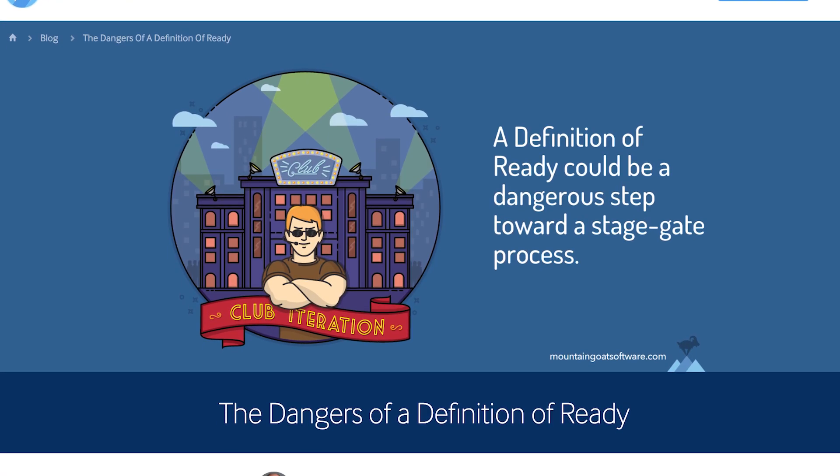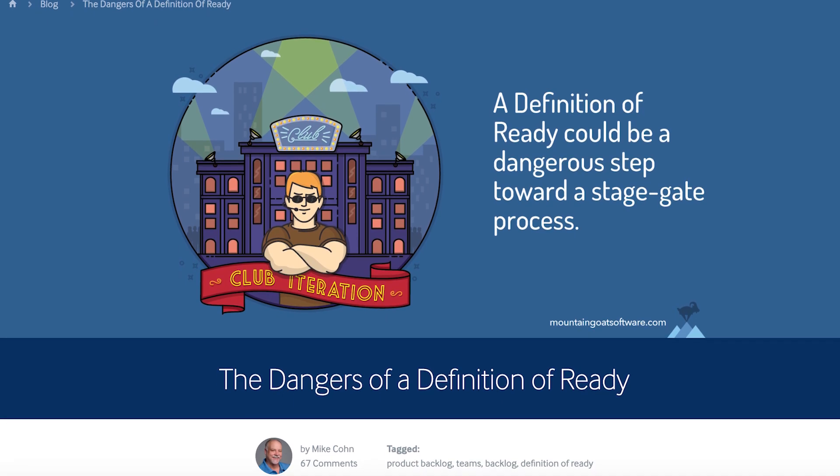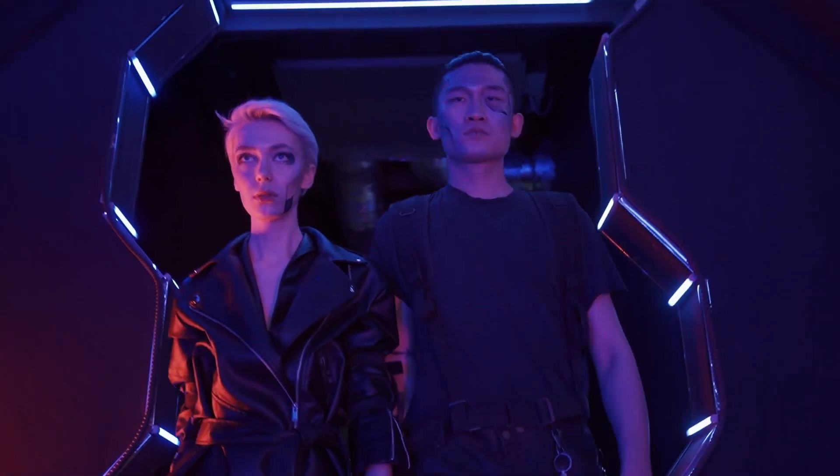I read a lot of articles taking the view that we shouldn't use it — ever. Those are respectable people and they have some valid arguments. Mike Cohn talks about the dangers of the definition of ready in his article with the same title. He compares the definition of ready to a big burly bouncer standing at the door of the iteration — and this is when we let it control what product backlog items can enter the iteration.